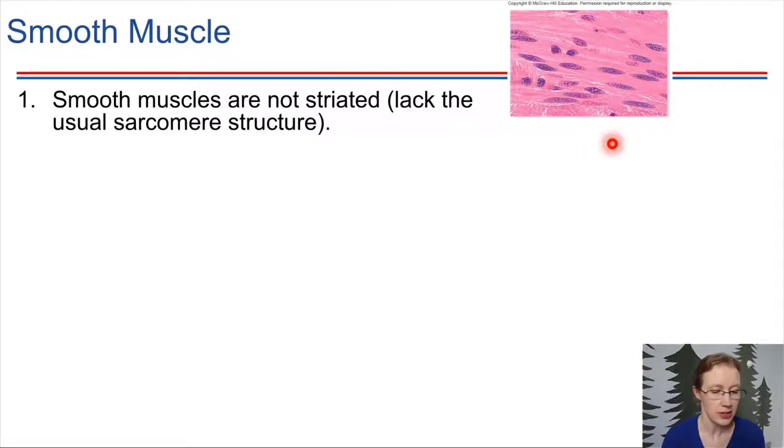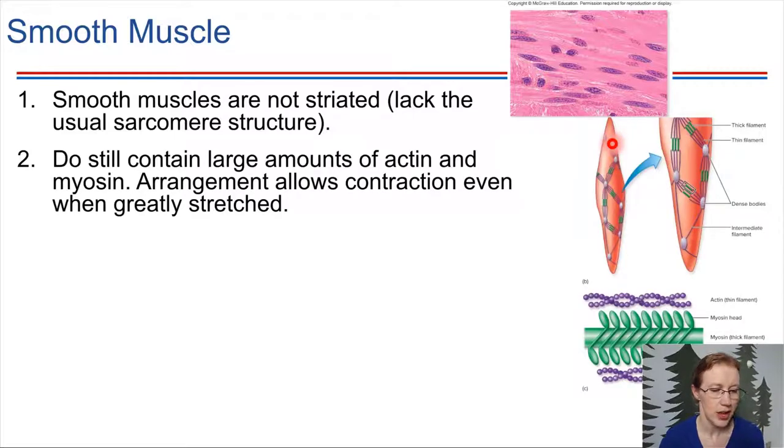It turns out smooth muscle does still have actin and myosin, however it's arranged a little bit differently. So when we look at the layout, they're not laid out in necessarily a linear pattern, rather it's more of a network of actin and myosin filaments. And this is a very useful thing. If you think about where smooth muscle is located, let's just think of the digestive tract for a minute.